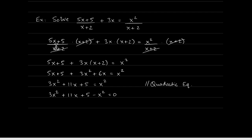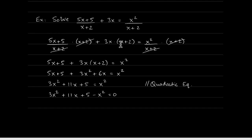We multiply the first term by x plus 2, the second term by x plus 2, and the right-hand side by x plus 2 as well. The denominators cancel with the x plus 2 we multiplied by. We're left with 5x plus 5 from the first term, 3x times x plus 2 in the middle, and x squared on the right.